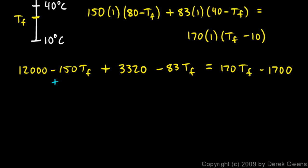If I add 150 TF and add 83 TF to each side, over here I end up with 170 plus 150 TF plus 83 TF.